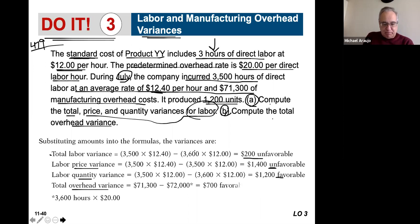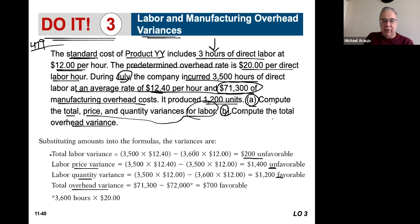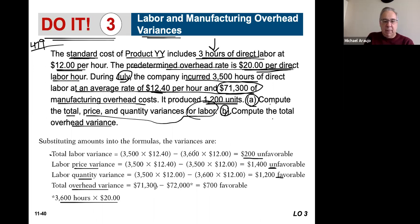For total overhead: we have $71,300 of actual overhead costs. What was it supposed to be? It was supposed to be $72,000 — calculated as three direct labor hours times 1,200 units times the $20 predetermined overhead rate. So you were expected to spend $72,000 but only spent $71,300. Your variance for overhead is favorable — $700 favorable.